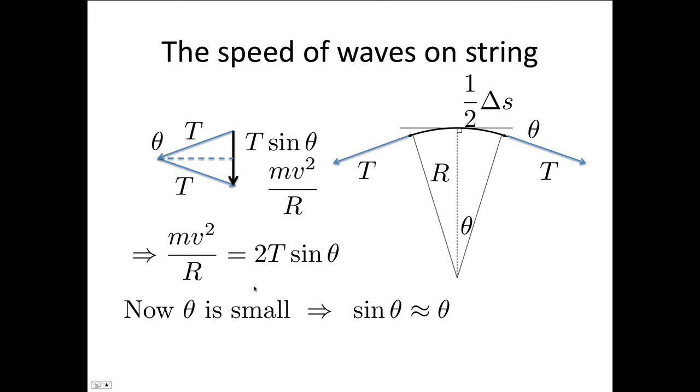Now we're going to make the small angle approximation. If theta is small, then sine theta is approximately theta. So we can replace this sine theta here with theta. That's what we've done here.